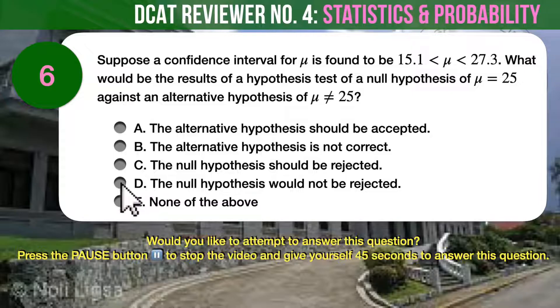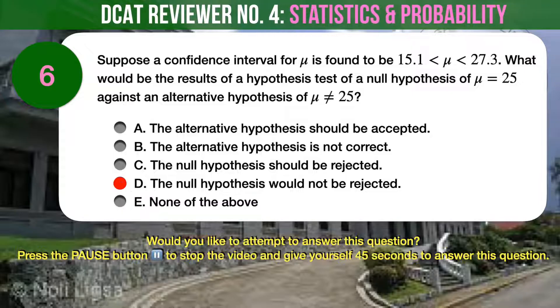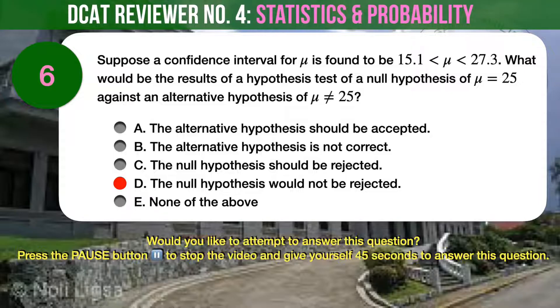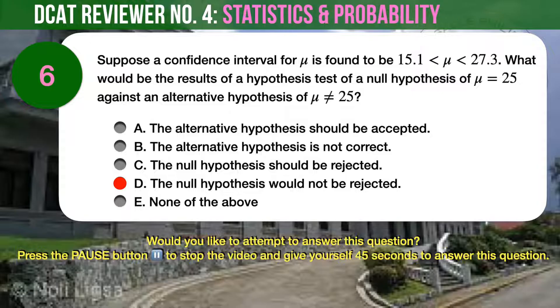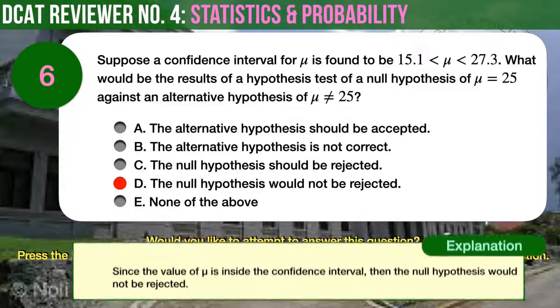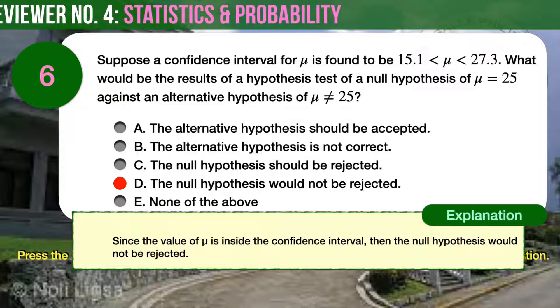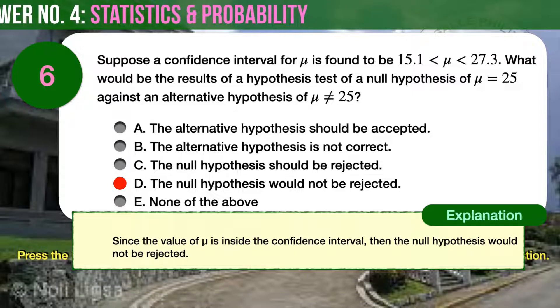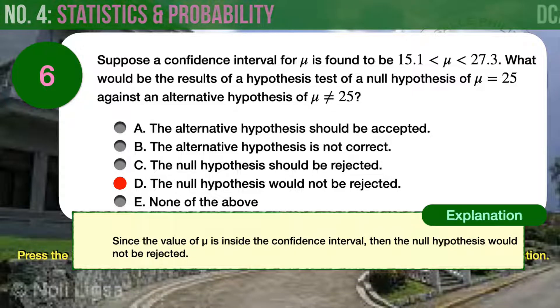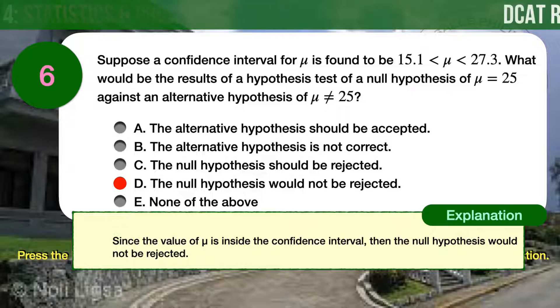The correct answer is D — the null hypothesis would not be rejected. Since the value of mu is inside the confidence interval, the null hypothesis would not be rejected.